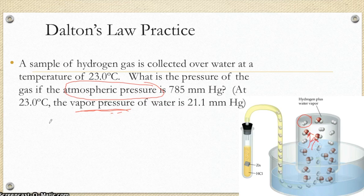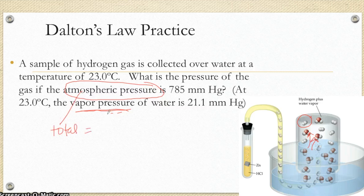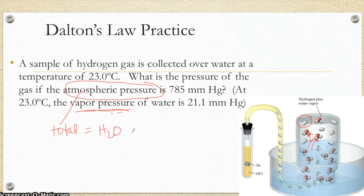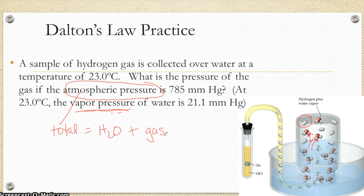So if the atmospheric pressure is my total, total is equal to sum of its parts. So total is equal to the vapor pressure of water, because the water evaporates, plus the pressure of whatever gas we were trying to collect. So it looks a little crazy, wordy questions, but literally there's these three numbers and you're adding or subtracting to find a missing number.